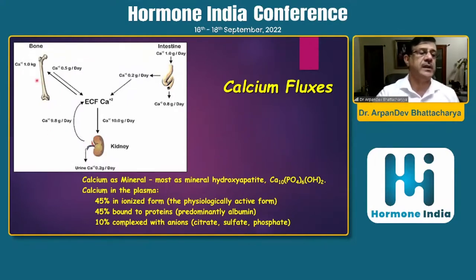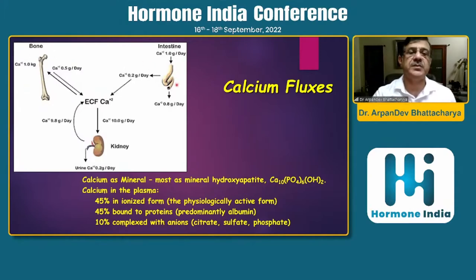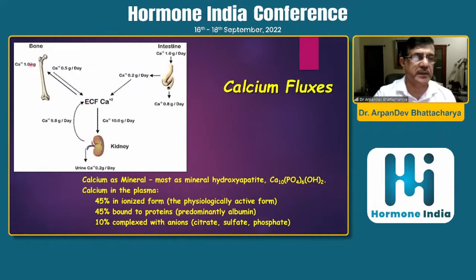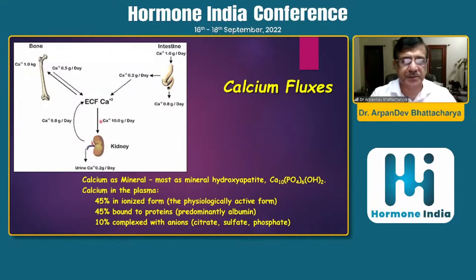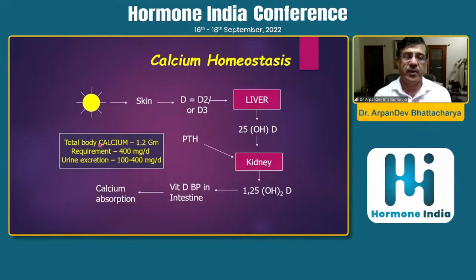And 10% is complexed with anions like citrate, phosphate, and sulfate. There are mainly three organs involved: bone, intestine, and kidney. Calcium comes from bone into extracellular fluid and goes back the same way. From the intestine, mainly absorption occurs, with some going out in stool. The kidney is a very important organ for maintaining calcium homeostasis.